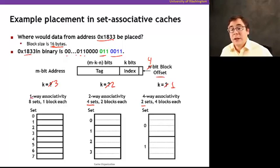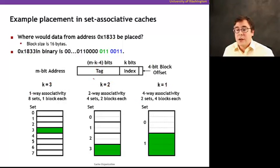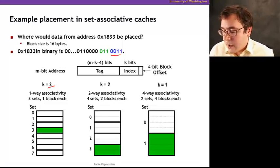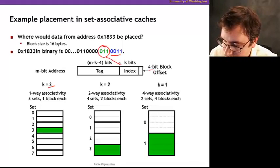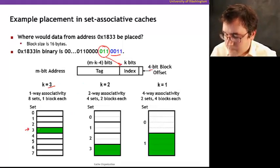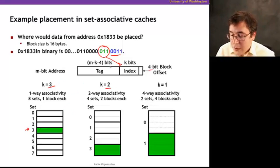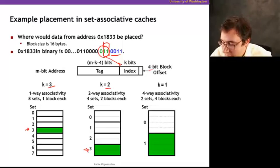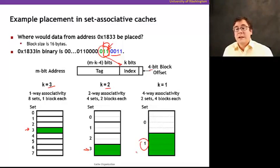Now with a more realistic example — address 0x1833, block size 16 bytes. 16 bytes requires 4 bits for the block offset. The number of index bits depends on associativity: 1-way (8 sets) needs 3 index bits; 2-way (4 sets) needs 2 index bits; 4-way (2 sets) needs only 1 index bit. Whatever bits remain are used for the tag. So for 0x1833 the index is 3 under 1-way, still 3 under 2-way using the next two bits, and determined by just 1 bit under 4-way.